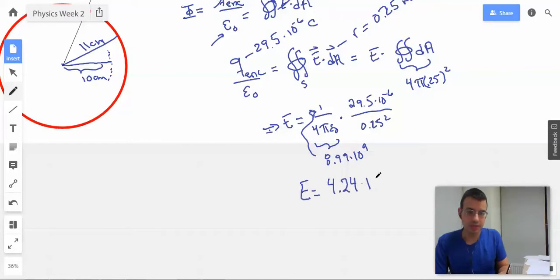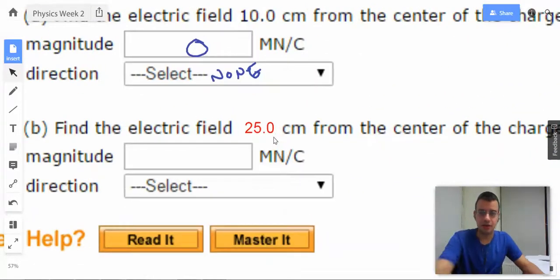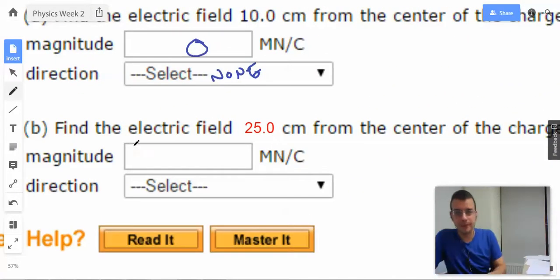4.24×10⁶, which is the same as 4.2 meganewtons per coulomb, newtons per coulomb, which is the unit for electric field. And the direction will be outward.